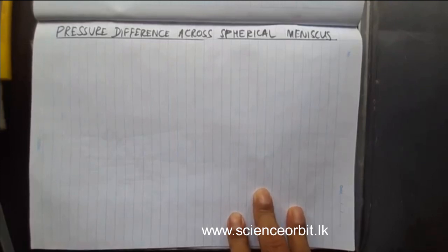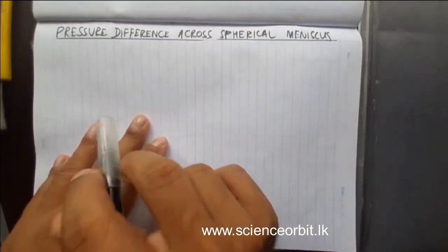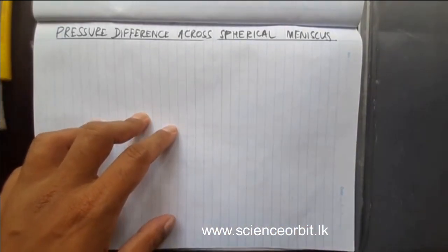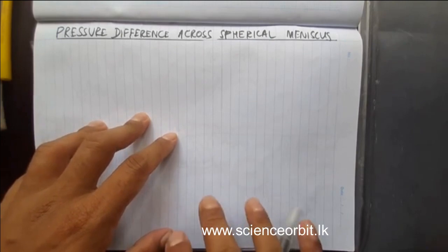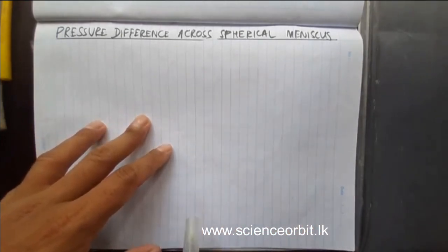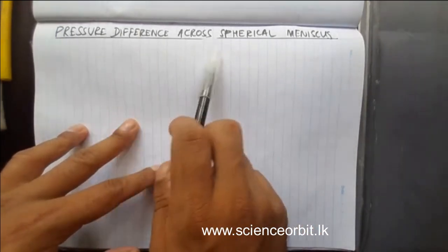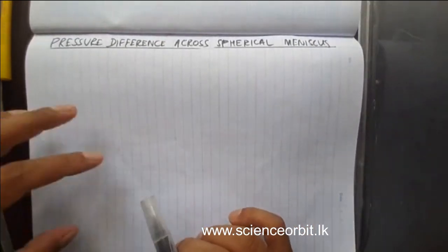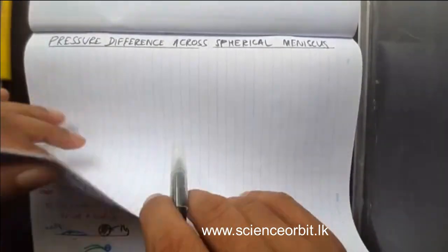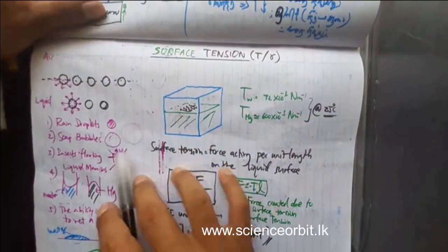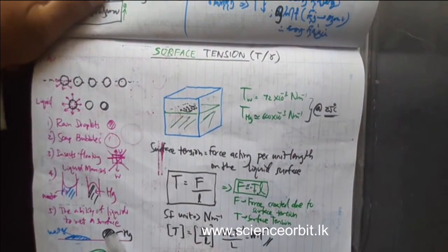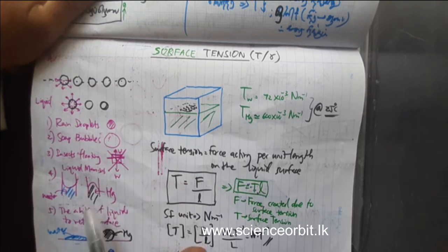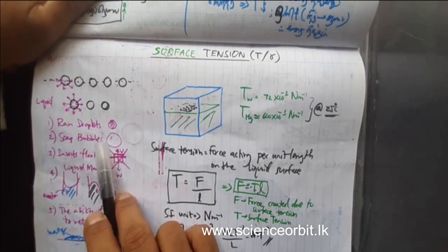The next concept we are going to learn is the pressure difference created across a spherical meniscus. In the previous tutorial we learned how meniscus are formed and how surfaces are formed, and as a continuation we will be learning this. But before that, at the beginning when we started the surface tension lesson, we learnt about phenomena we see around us in day-to-day life which are created due to surface tension, and now we are going to discuss about these two.